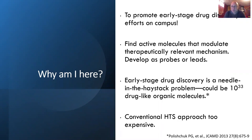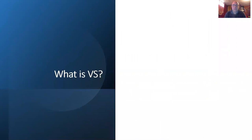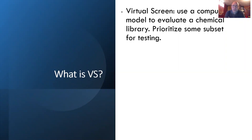The current approach we use at our facility is mostly HTS, which is high throughput chemical screening, and this is very expensive — basically testing lots and lots of molecules to see if you get an active, or what we call a hit. Virtual screening is where we use a computer model to evaluate all the molecules in a chemical library and try to prioritize a subset we think have the highest potential for activity.